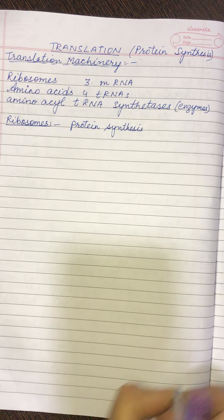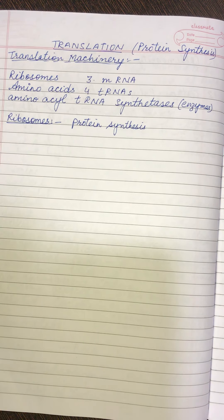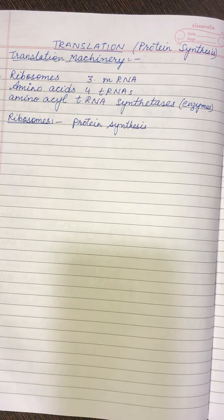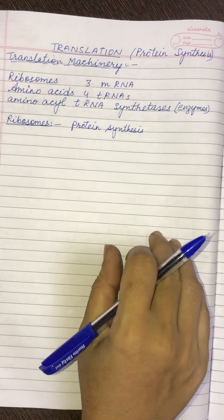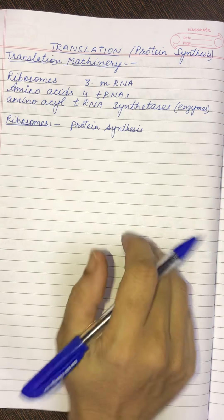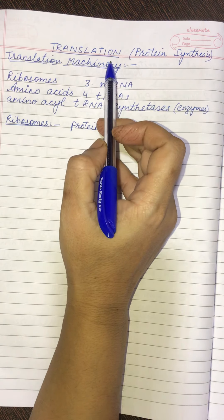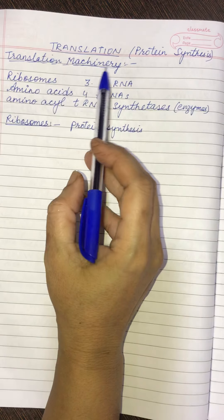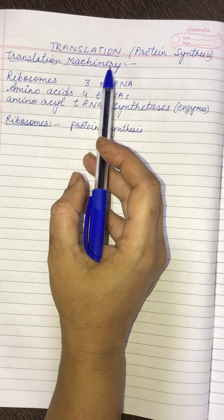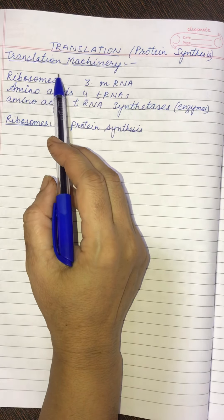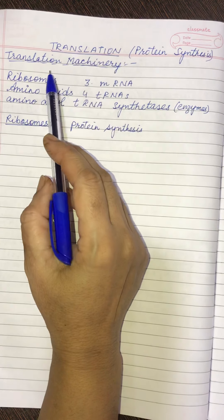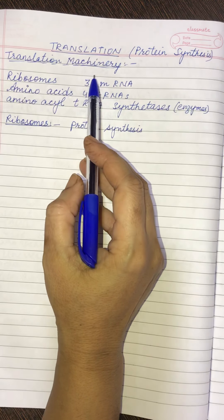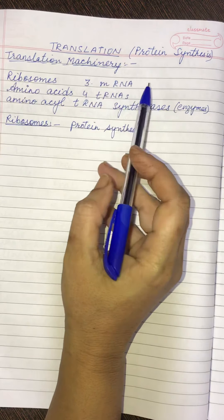Good morning children. Today we will do the translation. You know what is translation? So synthesis of proteins is known as translation. This process of protein synthesis is called translation. Before we do the actual mechanism of translation, we must know what is the requirement or translation machinery. Which raw materials are used in the process?